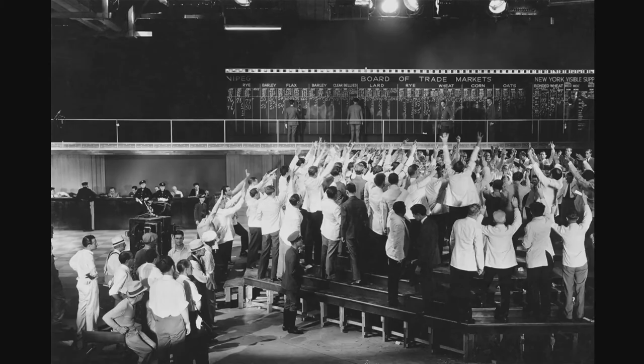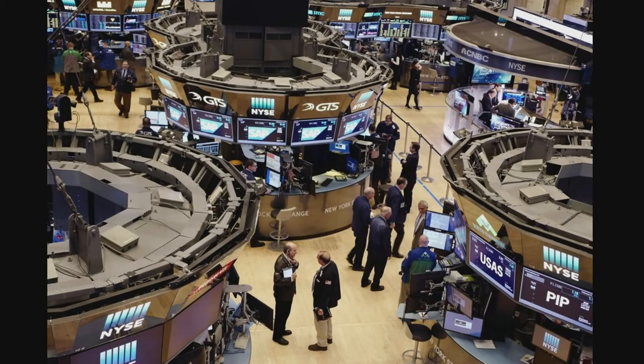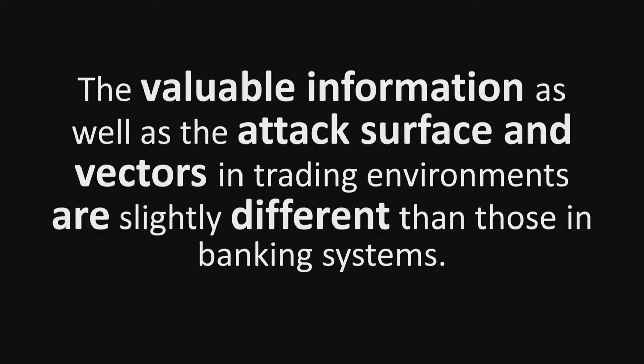This is how Wall Street looked like many years ago, and we passed from that to this — more computers, less people. We inherit the risks involved, the risks we all already know. It's also important to say that the valuable information and the attack surface on trading systems is different from those in banking systems. They are similar, but the information is slightly different, as are the attack vectors.